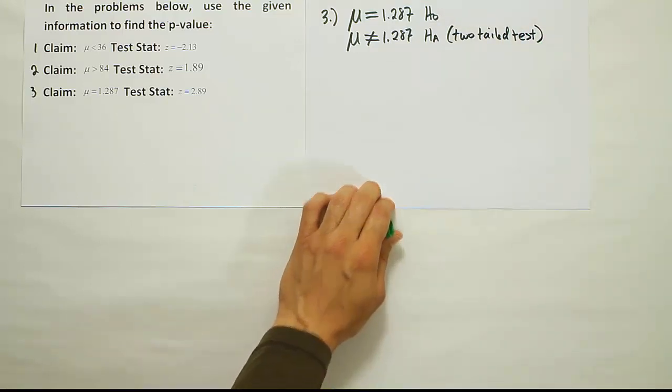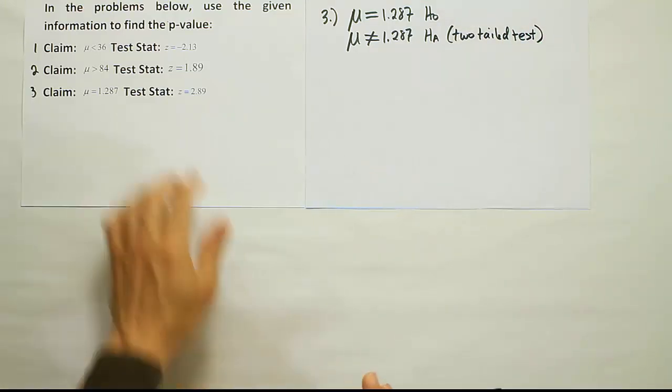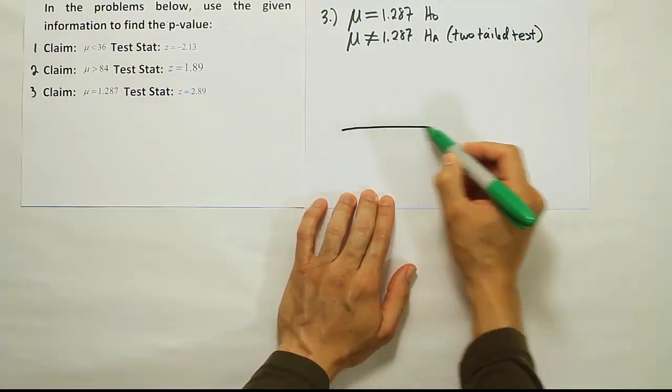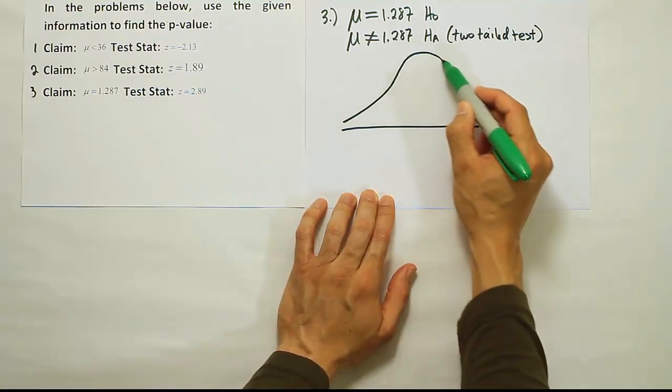Two-tailed test. Okay, if we know it's a two-tailed test, the next step is to label our test stat on a bell curve and then to use our table to find the p-value.